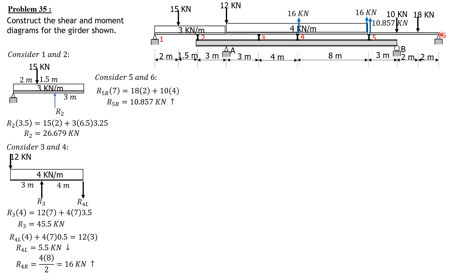The reaction at 6 is not important, as well as at 1. Let's transmit these reactions at 2, 3, 4, and 5 because they are now pushing the girder below. R2 is 26.679 downward. R3 is 45.5 downward. R4 is 16 minus 5.5, which is 10.5 downward. At 5, 16 plus 10.857 is 26.857 downward. This is the loading condition for the girder.